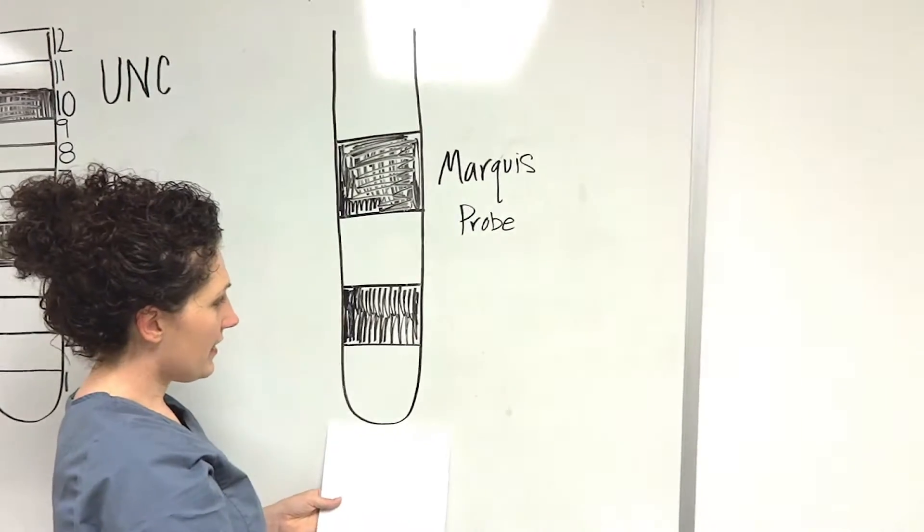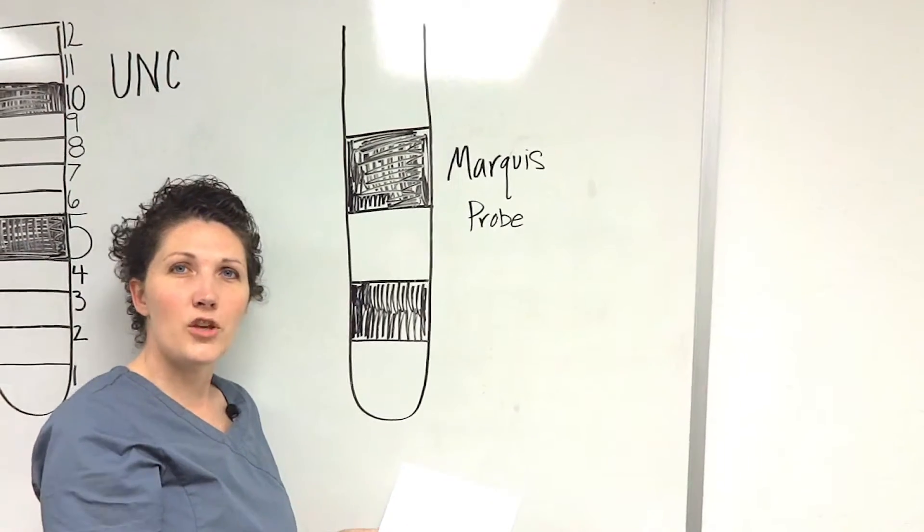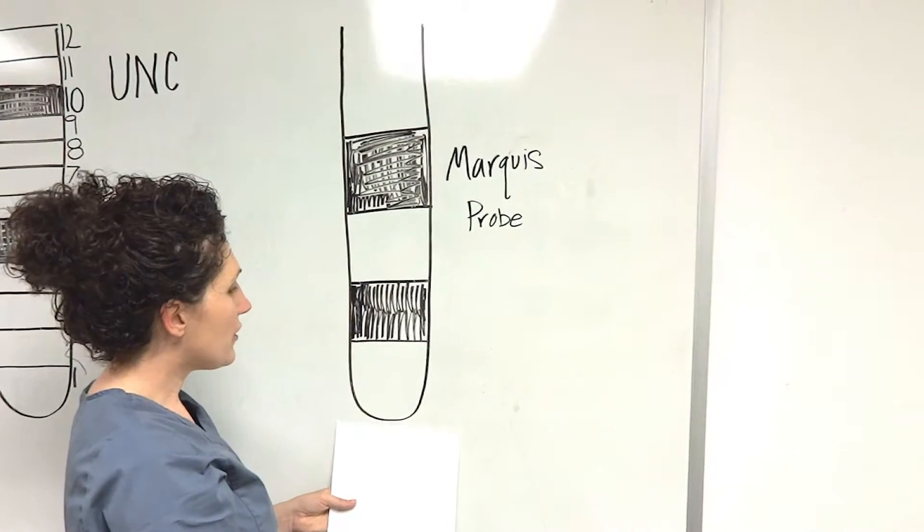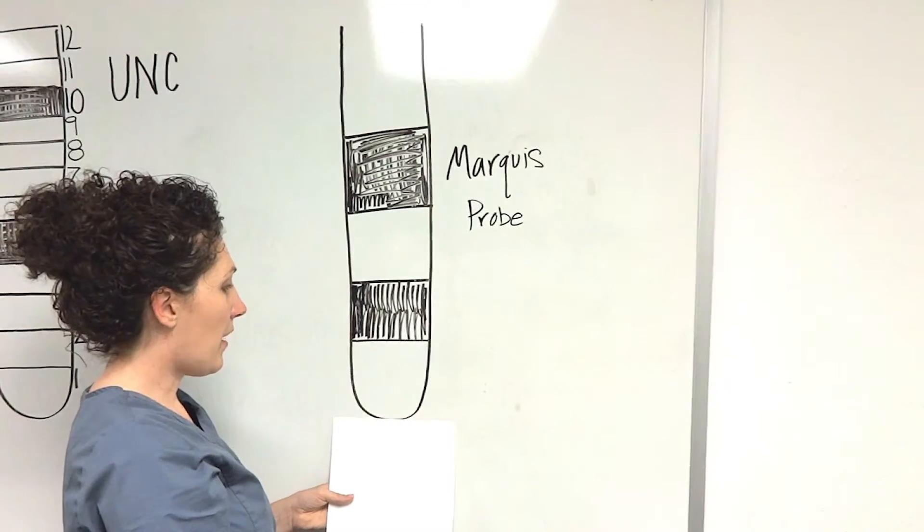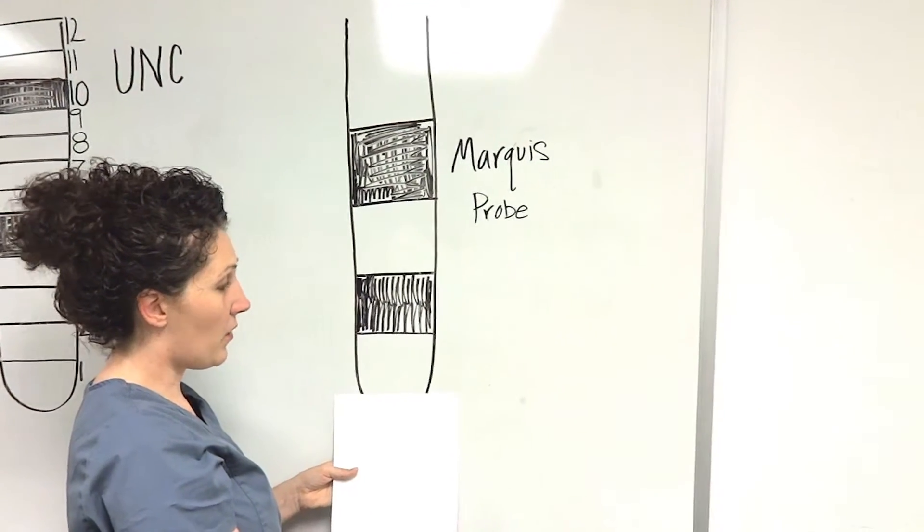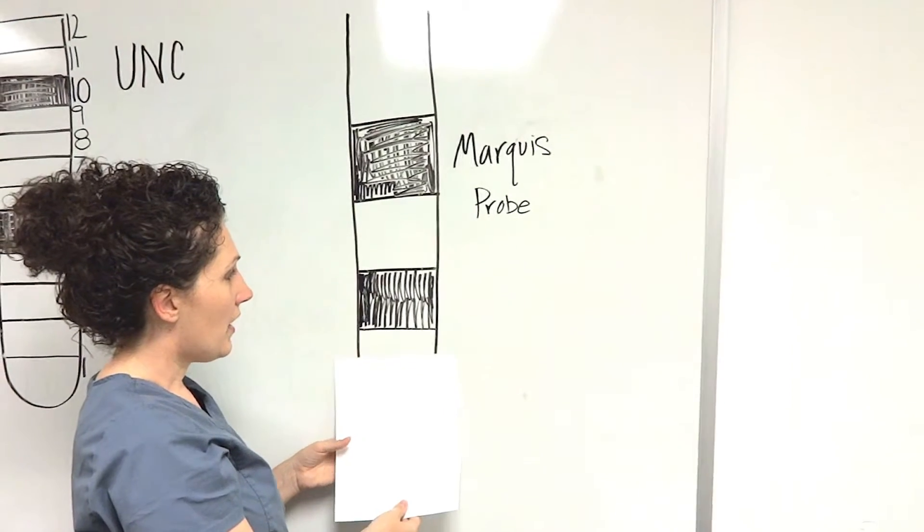To read this, it's a little bit more of a guesstimation than the UNC probe would be. As you insert the probe into the pocket depth, this is about a 1, 2, and 3.